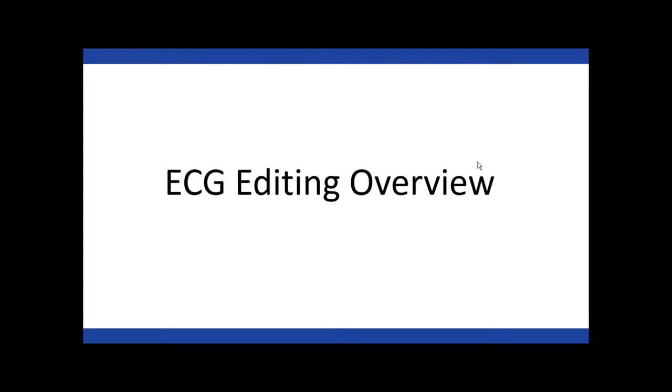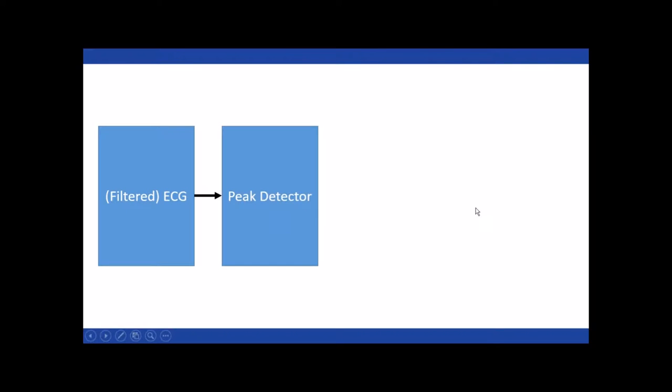I'm going to start by giving a brief overview of the steps leading up to editing, so we understand where the signal is coming from and where the points are that we're editing. We start with our ECG signal, which may be filtered. We pass that ECG signal through a peak detector — an algorithm that attempts to identify the R peaks for each cycle of ECG by searching for characteristics matching the expected characteristics of an R peak.